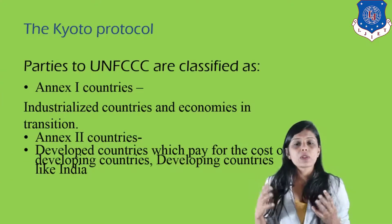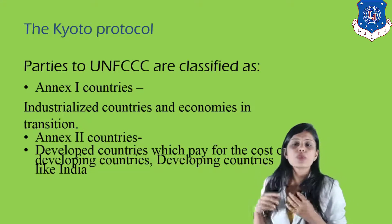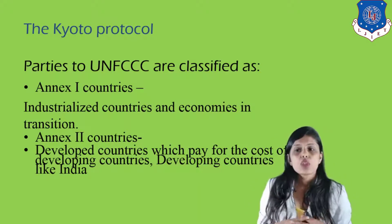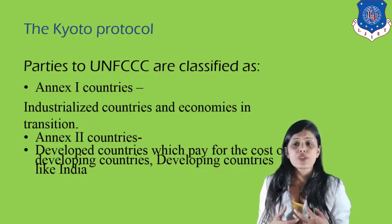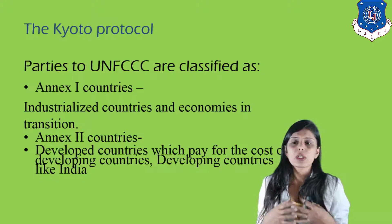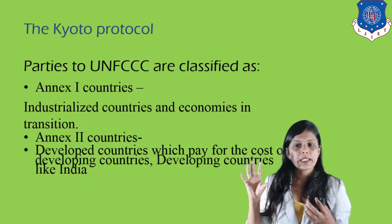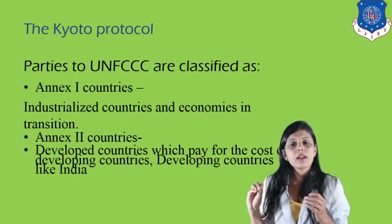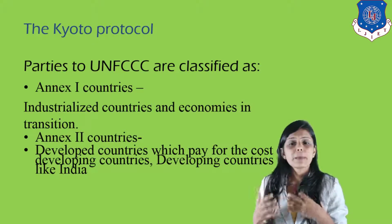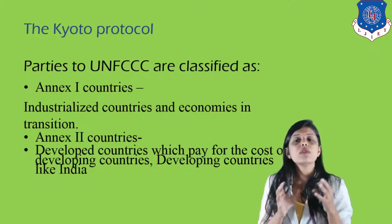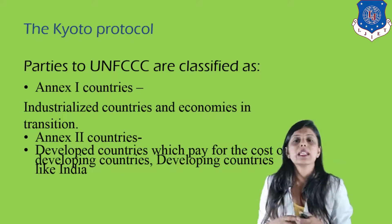The Kyoto Protocol was designed to reduce global warming and the effects of climate change. Parties to the UNFCCC are classified as NX1 countries — industrialized countries and economies in transition — who are responsible for their own carbon footprint. NX2 countries are also developed countries that pay for the cost of developing countries like India, helping them develop industries while also clearing their own carbon footprint.